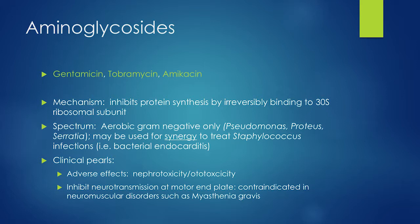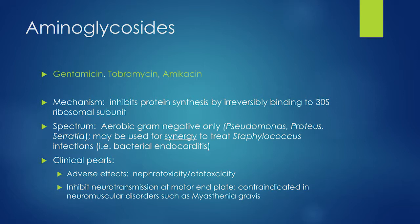Aminoglycosides have pretty broad gram negative coverage — almost only gram negative. If you combine aminoglycosides with beta-lactams, they can synergistically treat gram positive infections, but typically we're using aminoglycosides for gram negative infections including Pseudomonas. Gentamicin and tobramycin are the two most common; amikacin is also an aminoglycoside.